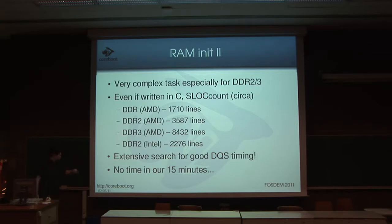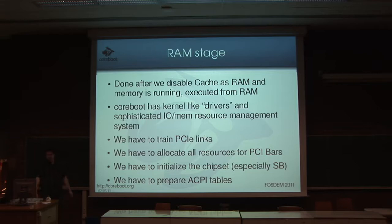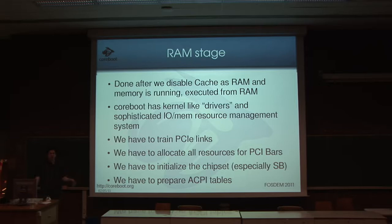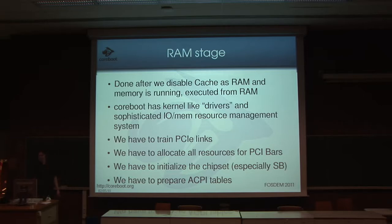Then the RAM stage is executed. We copy coreboot to the second stage and run from RAM. In this stage we train the PCI Express link, do all resource enumeration on the PCI bus such as setting up IO ports, and prepare tables required by the operating system, including ACPI and power management. There is still a lot to do after RAM is running.